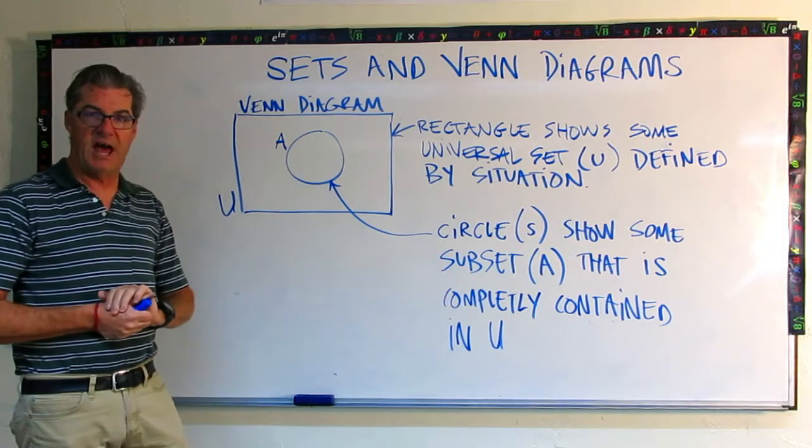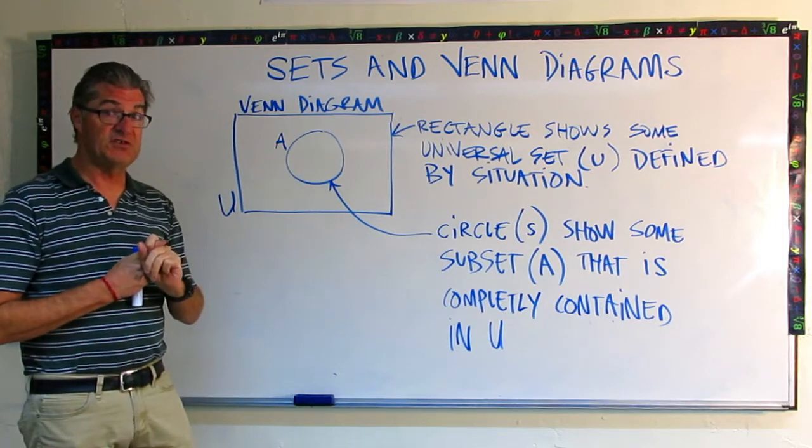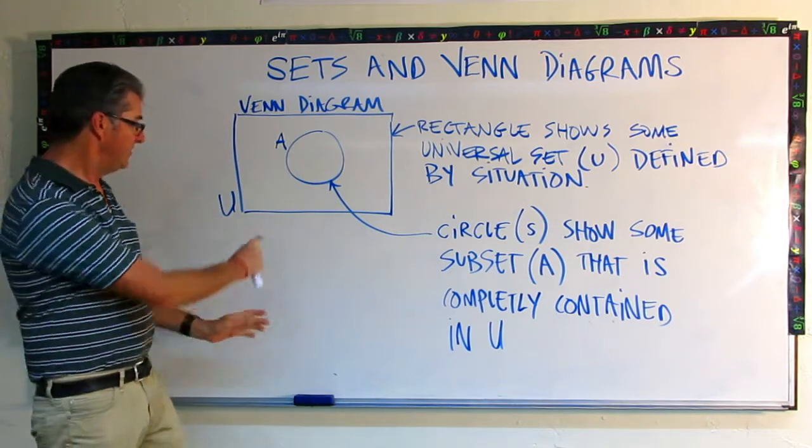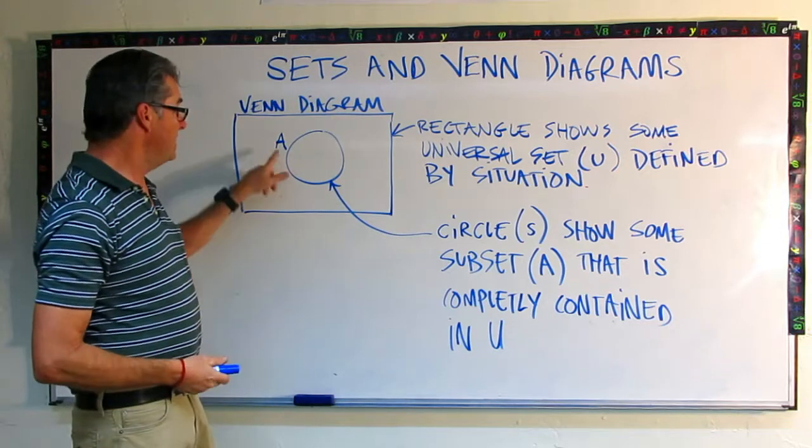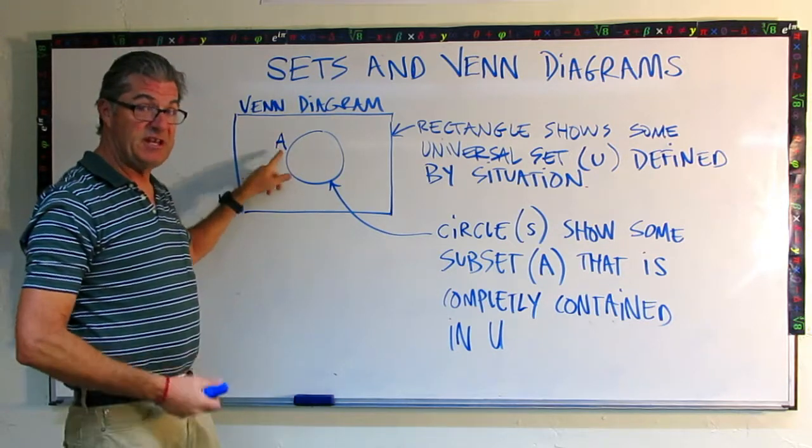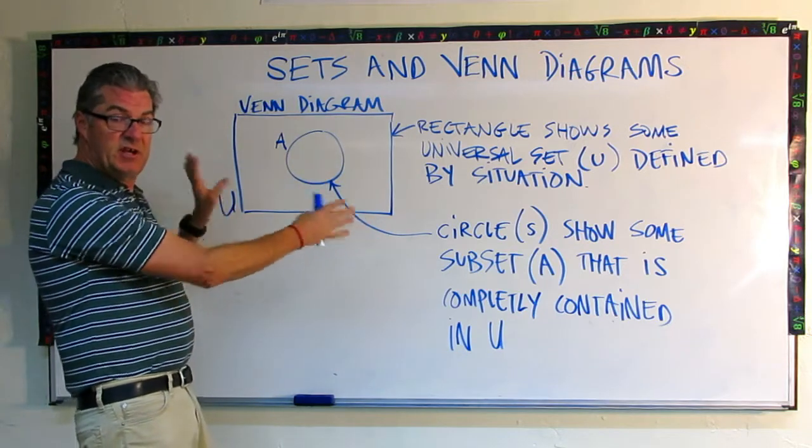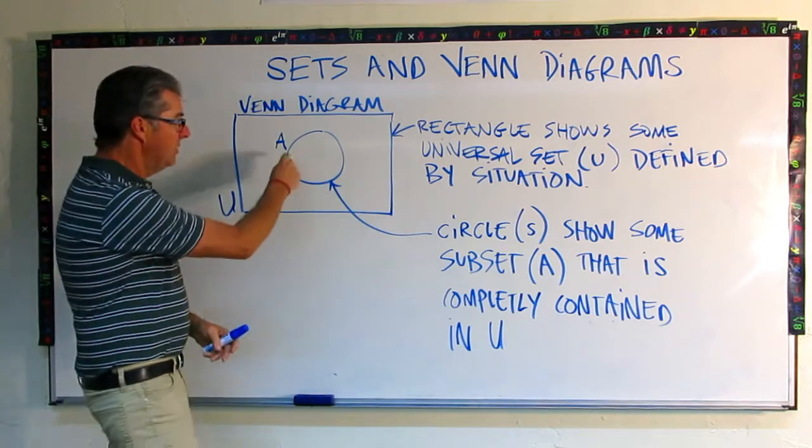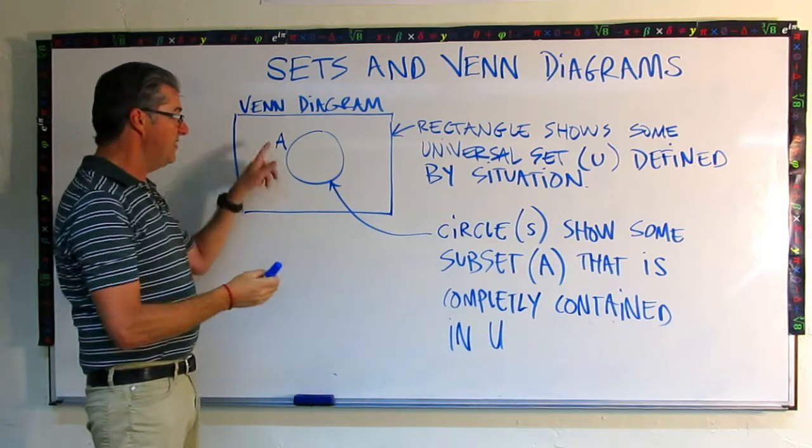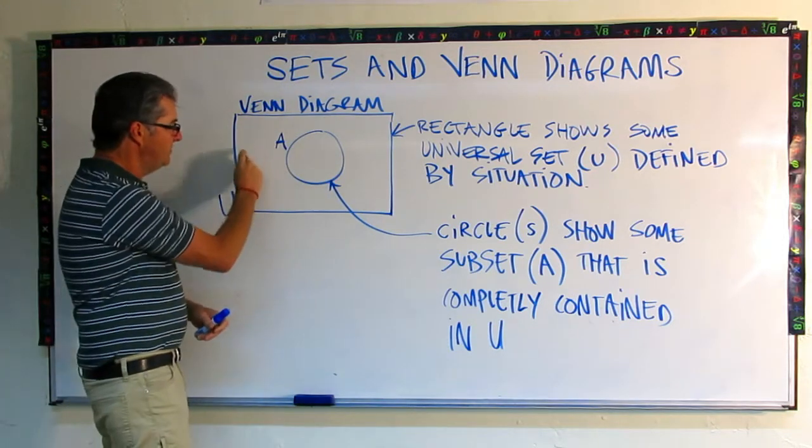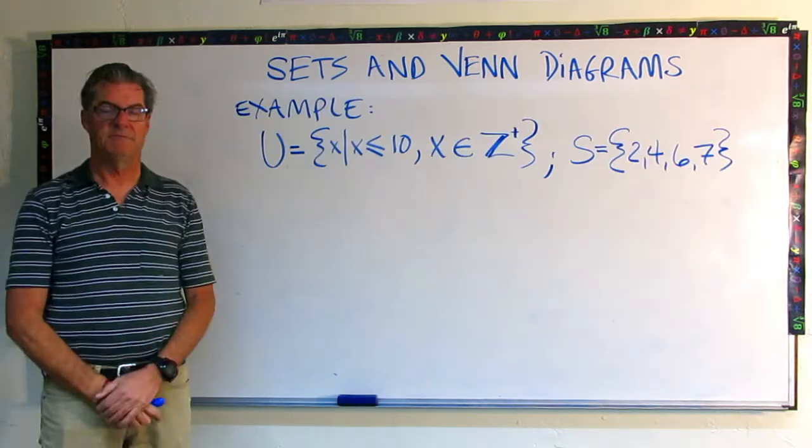Let's talk about how that might look in life. Like in a high school, we might define our universal set as all students. So the rectangle represents all the students at our high school. We might define A, our subset, as all the boys. So if we were to populate this with the actual individuals, we'd put the names of all the boys inside the A circle because they're that subset. And the girls' names would be all out here because they are in our universal set.